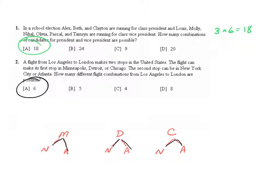You may notice that I left off Los Angeles and London. I didn't mention either of those or include either of those in my tree diagram, and that's because in every single one of these combinations we're always starting in Los Angeles and always ending in London. So the only variables in this problem are the first stop and the second stop of the flight.